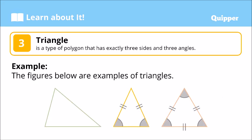We have what we call a triangle. A triangle is a type of polygon that has exactly three sides and three angles. These are examples of triangles — we have different kinds of triangles here. Let's learn them one by one.